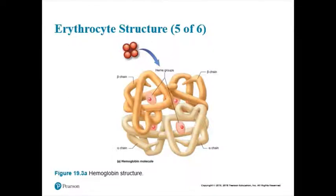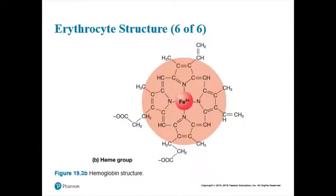So when we talk about carrying gases like oxygen — yeah, we say blood could do it. But now you know it's really the red blood cell carrying the oxygen; it's really the hemoglobin inside the red blood cell; and it's really the iron inside the hemoglobin. When hemoglobin binds to oxygen, that's a chemical reaction producing a compound called oxyhemoglobin. Oxyhemoglobin is just what we call hemoglobin once it's bound itself to oxygen.